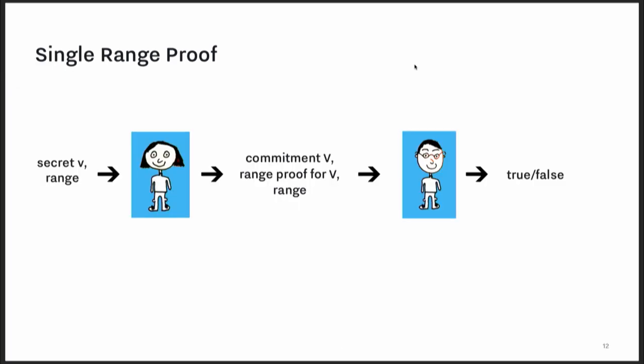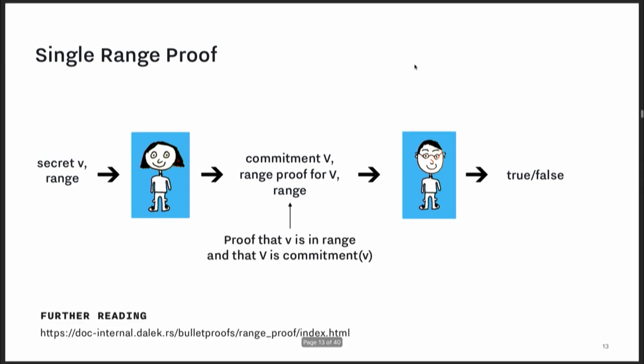The general intuition is: Peggy the prover has a secret value V and wants to prove that it's in a certain range. She makes a commitment, big V, which in the Bulletproofs case is a Pedersen commitment to V. Then she makes a range proof for big V and gives the range proof and the big V commitment to Victor the verifier. Victor runs predefined math over the range proof and outputs true or false. The range proof contains two statements: a proof that little V the secret value is in range, and a proof that big V is actually a commitment to little V — all without revealing what little V is.